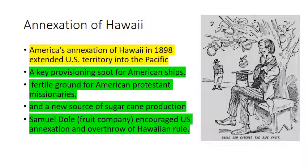Some of the first territory we acquire is Hawaii, which we annex in 1898, extending U.S. territory into the Pacific. Hawaii was an important place for provisioning American ships traveling to Asia, a fertile ground for American religious missionaries, and a source of sugar cane production. Samuel Dole — think of the fruit company — encouraged U.S. annexation and the overthrow of Hawaiian rule. The naval base Pearl Harbor will be constructed there.